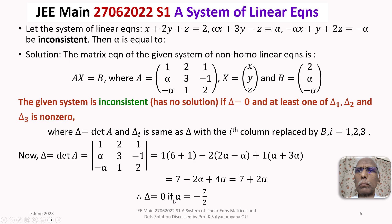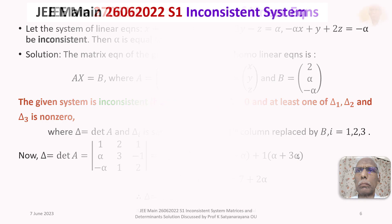Delta is equal to 0 if alpha is equal to minus 7 by 2. Students normally stop here since the answer appears in the options — but you must also convince yourself that at least one of delta 1, delta 2, delta 3 is non-zero for alpha equal to minus 7 by 2. I will show this in the next slide.